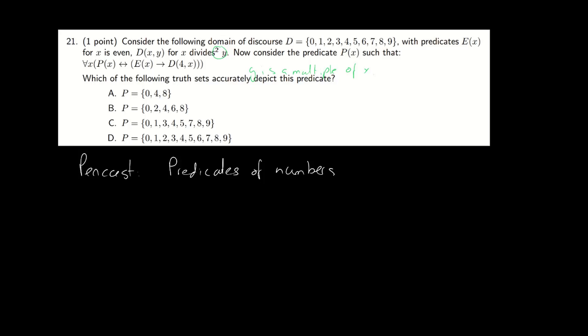Now we want to know when is the predicate P(x) true. And for that, we have this statement that says for all x, P(x) is true if and only if E(x) is true. E(x) implies D(4,x).